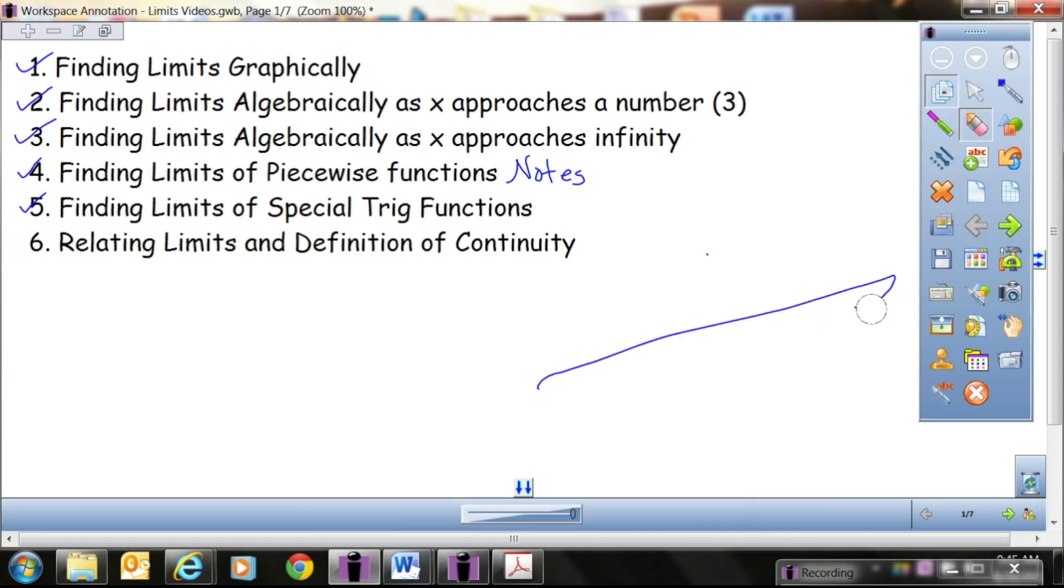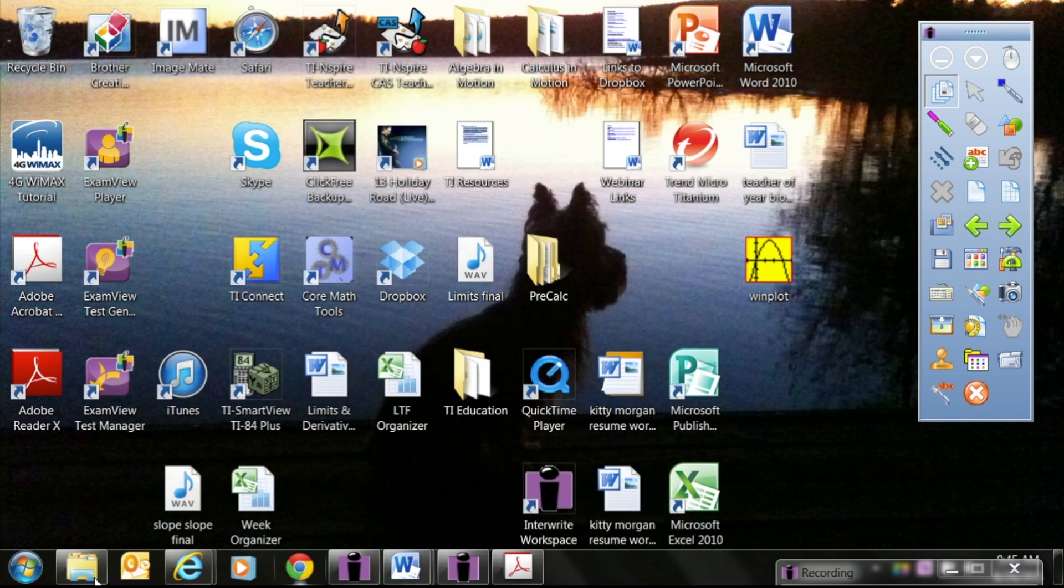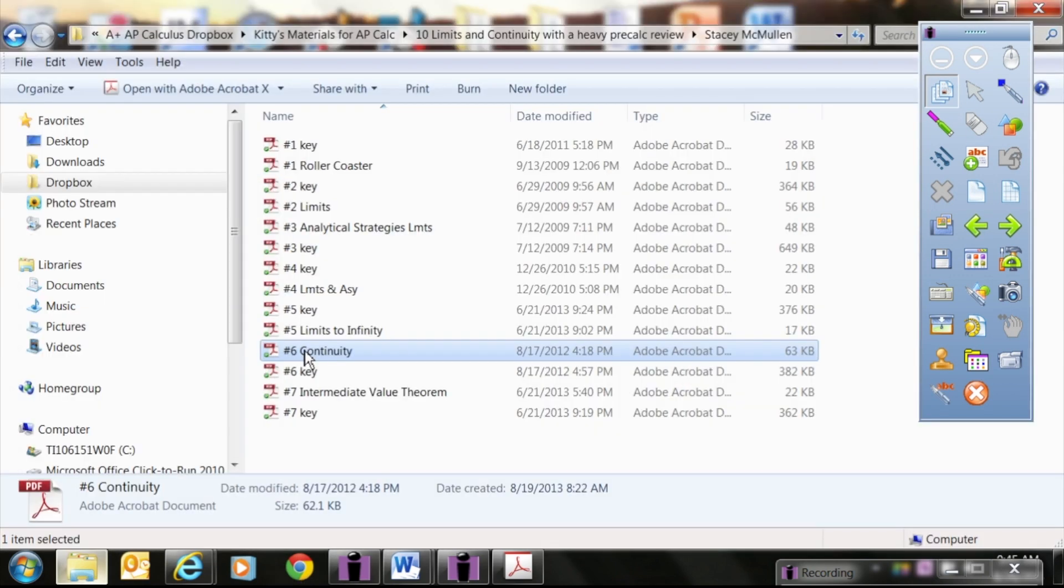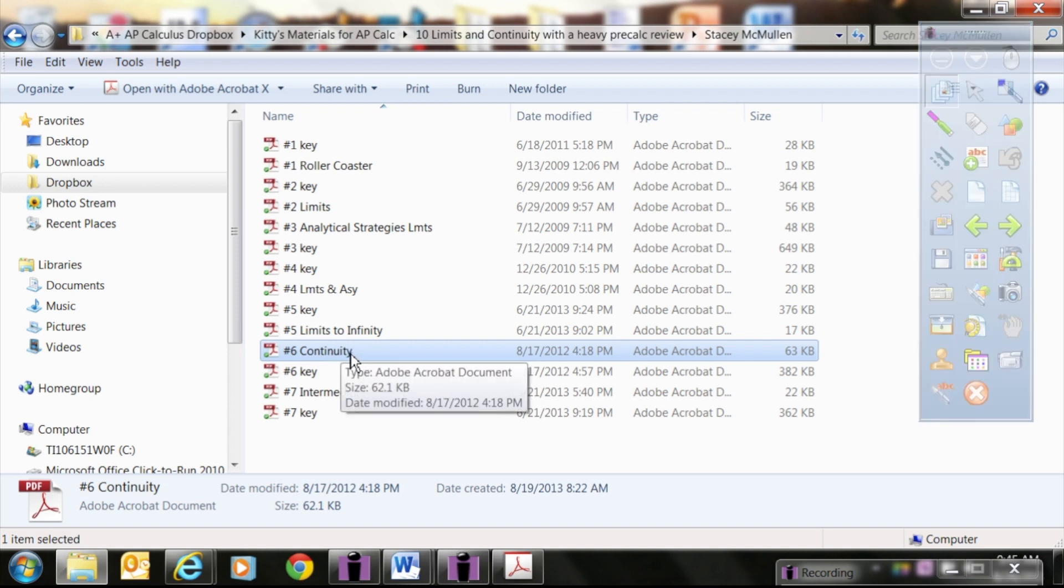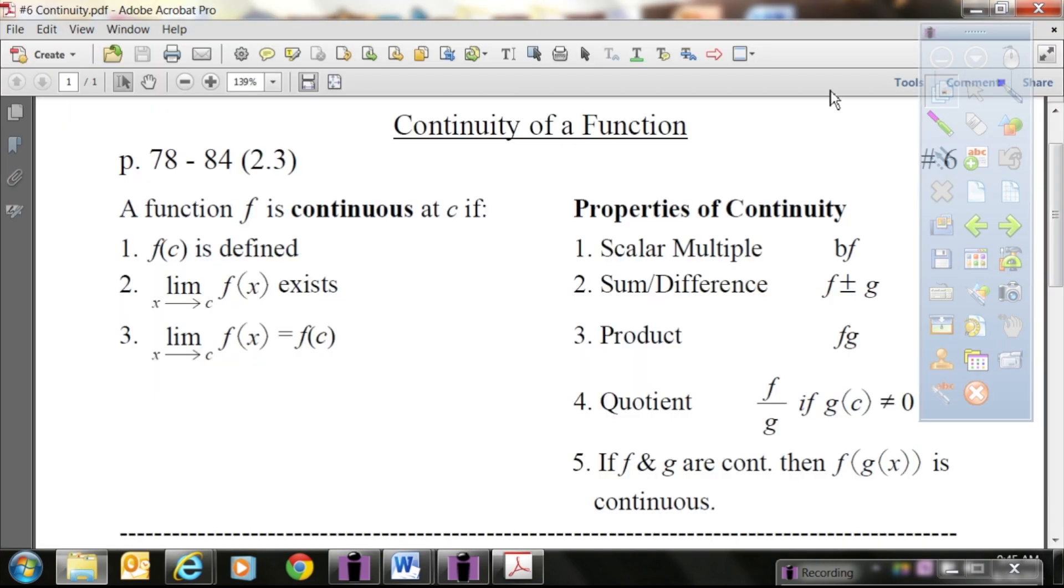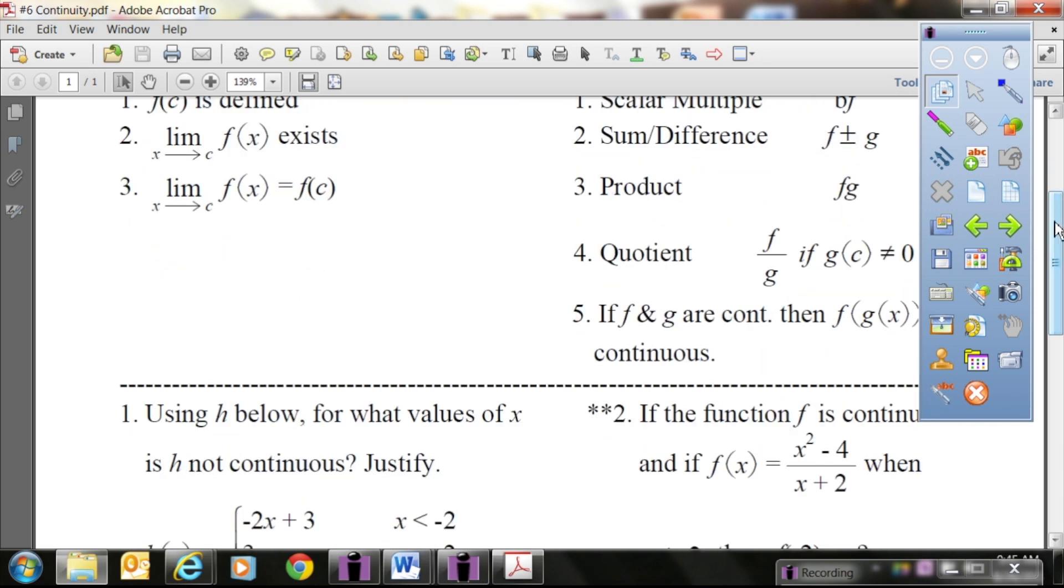So I'm going to go pick up Stacy's card. I'm going to go to my Dropbox, and this is card number six. I don't know if these have been changed or not, but this is the latest one I have. So she goes through and defines the continuity at C, so that it's got to be defined, the limit has to exist, and the y value of the limit and the y value of the function have to be the same. So let's go through and work a few of these problems together.